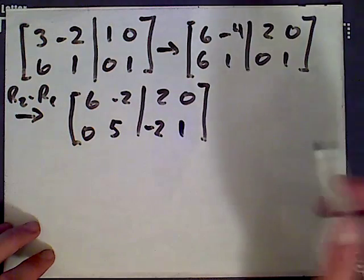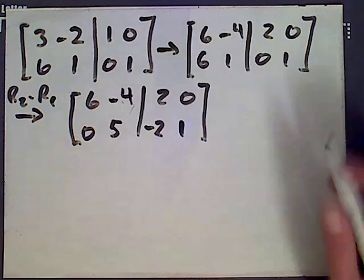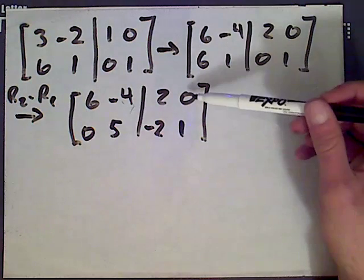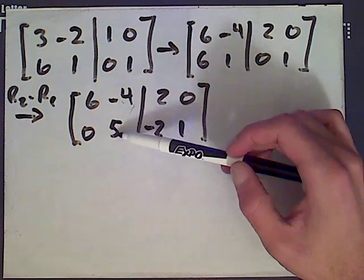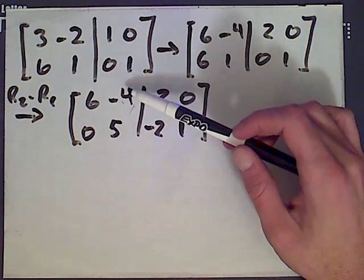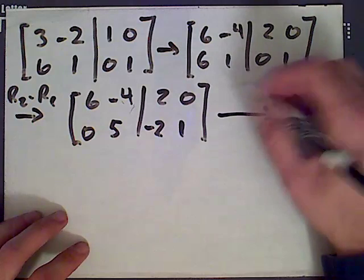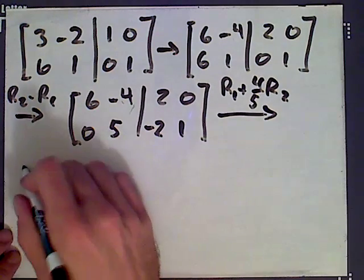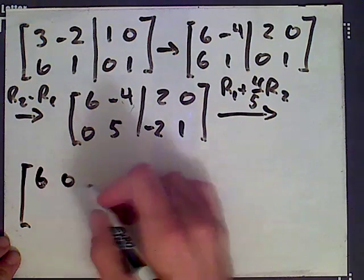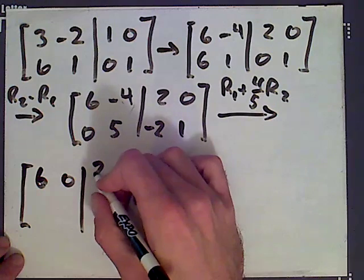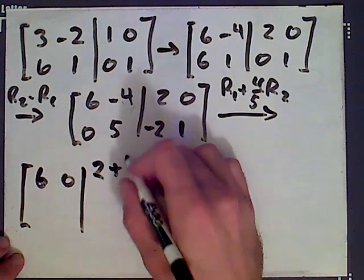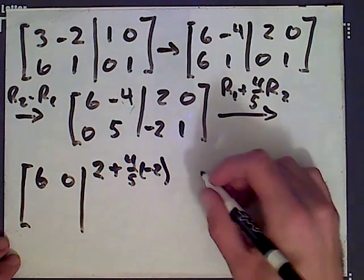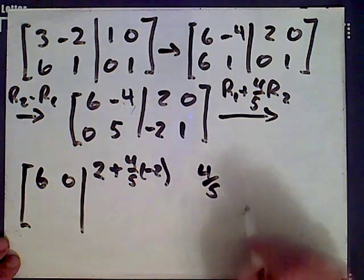Next what we want to do... Again, I made the same error here. This is a negative 4. So make sure you make that change. The next step is to take row 1 and add some multiple of row 2 so as to get rid of this negative 4. So we should add 4 over 5 times row 2. So row 1 plus 4 over 5, row 2. What we get is 6. That becomes a 0. We get 2 plus 4 over 5 times negative 2 in that entry. And we get 4 over 5. And we get 4 over 5 in the last entry here. 0 plus 1 times 4 over 5. And the second row stays the same.